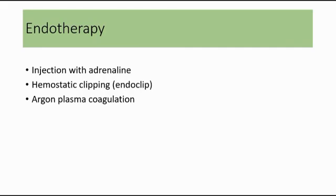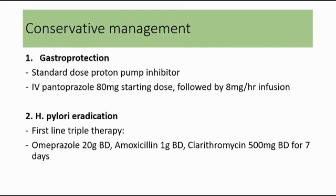For conservative management of peptic ulcer disease, the first is gastroprotection to enhance protective mechanisms by giving a proton pump inhibitor, for example pantoprazole. The standard dose is intravenous pantoprazole 80 mg as starting dose, followed by 8 mg per hour infusion. The second management is H. pylori eradication if H. pylori infection is causing the peptic ulcer disease. The first-line triple therapy involves three drugs: omeprazole, amoxicillin, and clarithromycin, for seven days.